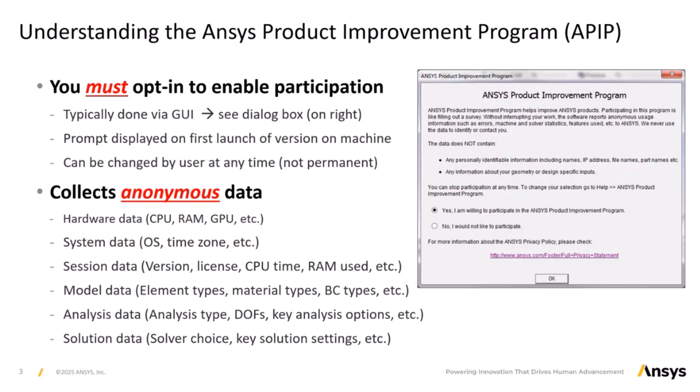For those unfamiliar with APIP, it is an entirely optional data collection initiative that was launched in 2017. It gathers anonymous usage data to help enhance products and deliver better updates. When you first launch the mechanical APDL application through the graphical user interface, you are presented with a consent dialog box. Data collection only commences if you select yes to opt in.